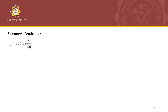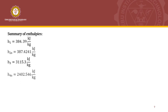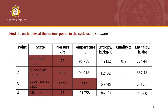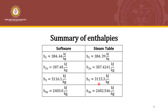A summary of the enthalpies from the steam table is shown here. We can also obtain the enthalpies at the various points using software, and as a comparison, the results are more or less the same. In this problem, we will use the results obtained from the software. You can also use the steam table values if you prefer, but for this example, I will illustrate using the software values.